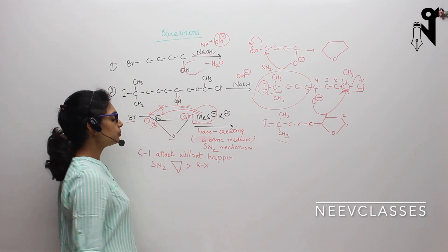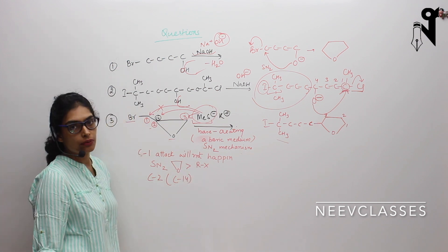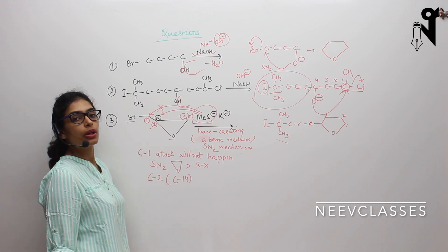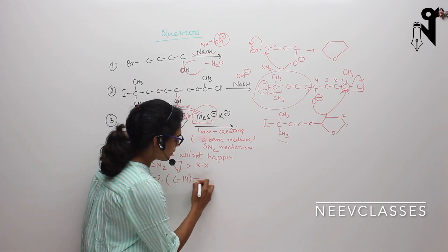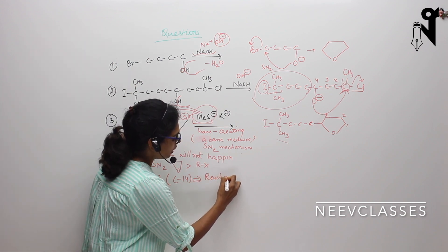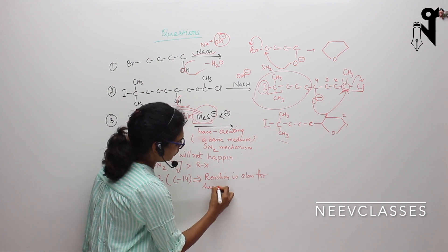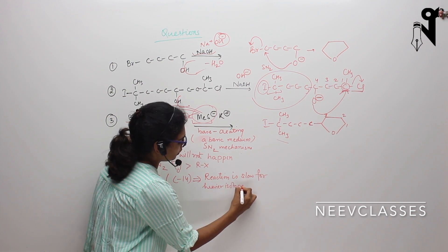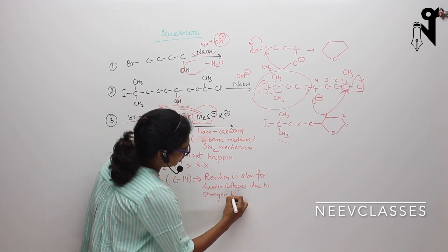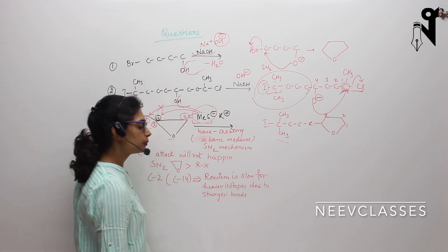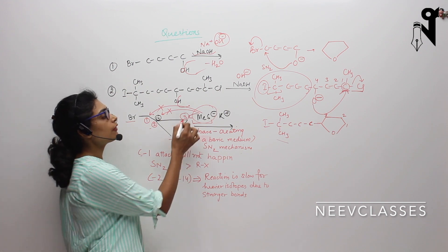Now what about carbon number 2? On carbon 2, the carbon is carbon-14 which is a heavier isotope of carbon. Breaking the bond of a heavier isotope is difficult. Hence the reaction is slower for heavier isotopes due to stronger bond strength. Hence breaking the bond between carbon and oxygen will be tougher, and this nucleophile will not attack on the second carbon. So we are left with the third option — the third carbon.